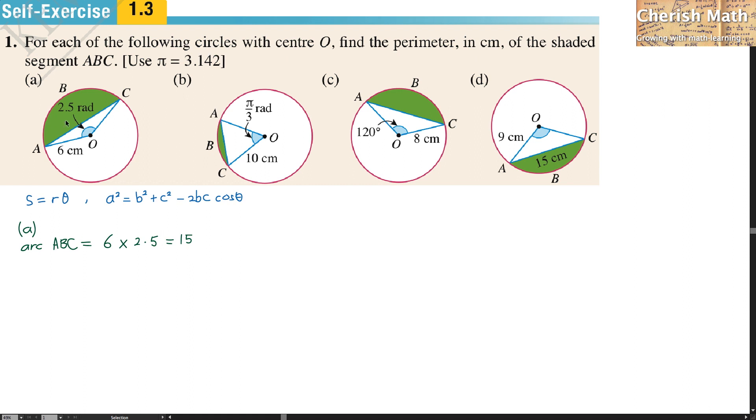Now I'm looking for the length of the chord AC which is the chord of this circle here by using this so-called cosine rule. And after substituting each of the values into the formula, I will be getting this. And now the length of AC is equal to 11.4.